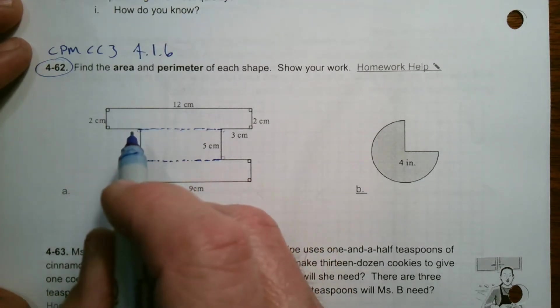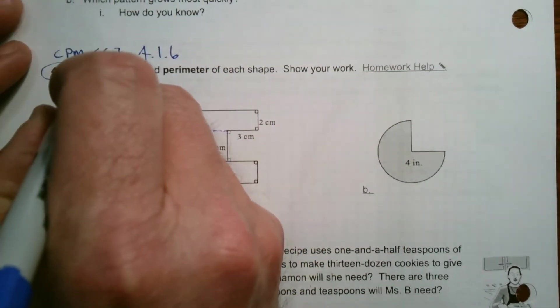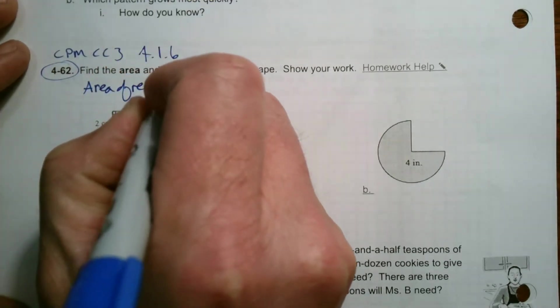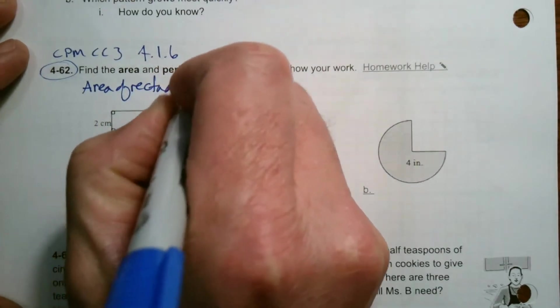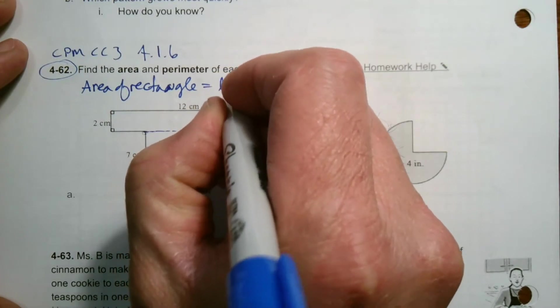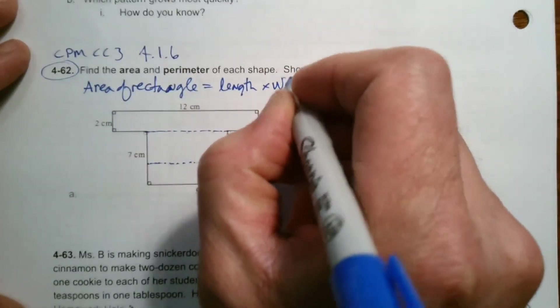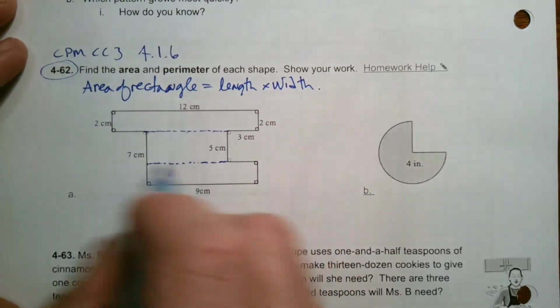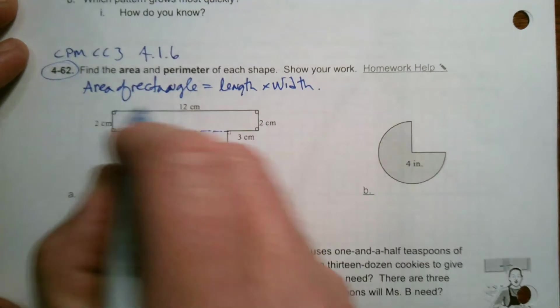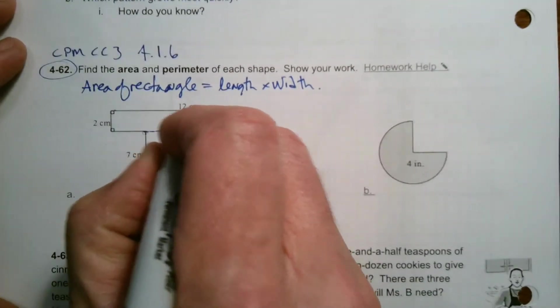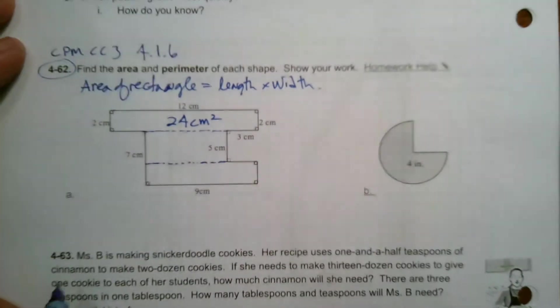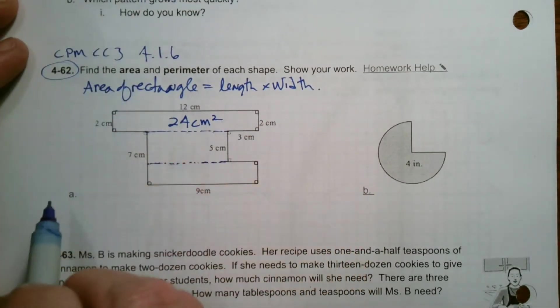Remember, to find area of a rectangle, area is your length times your width or base times height, same thing. So here we have this width of two, the length of 12. So two times 12, that gives me this rectangle has an area of 24, and it's centimeters squared as our unit. We're always dealing with squared units when we talk about area.